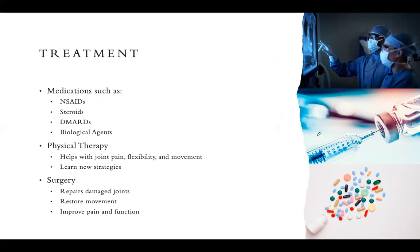The sooner RA is diagnosed, the quicker treatments can be implemented to slow progression and control inflammation. The main goals are to slow joint damage, relieve pain, and reduce inflammation. Medications include anti-inflammatory drugs, non-steroidal anti-inflammatory drugs (NSAIDs) for pain and inflammation, steroid injections for inflammation, and disease-modifying anti-rheumatic drugs (DMARDs), which slow progression and prevent permanent joint damage by suppressing the immune and inflammatory response. Biological agents, also called biological response modifiers, work alongside DMARDs to further suppress these responses.